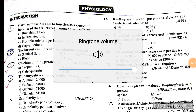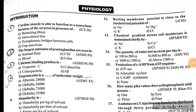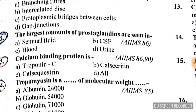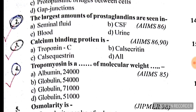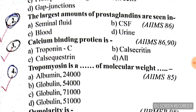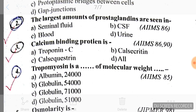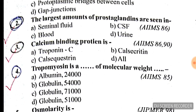Good evening doctors, today we are going to discuss physiology AIMS PG MCQs. Let's start. Question number 2: the largest amount of prostaglandins are seen in — the answer is A, seminal fluid.